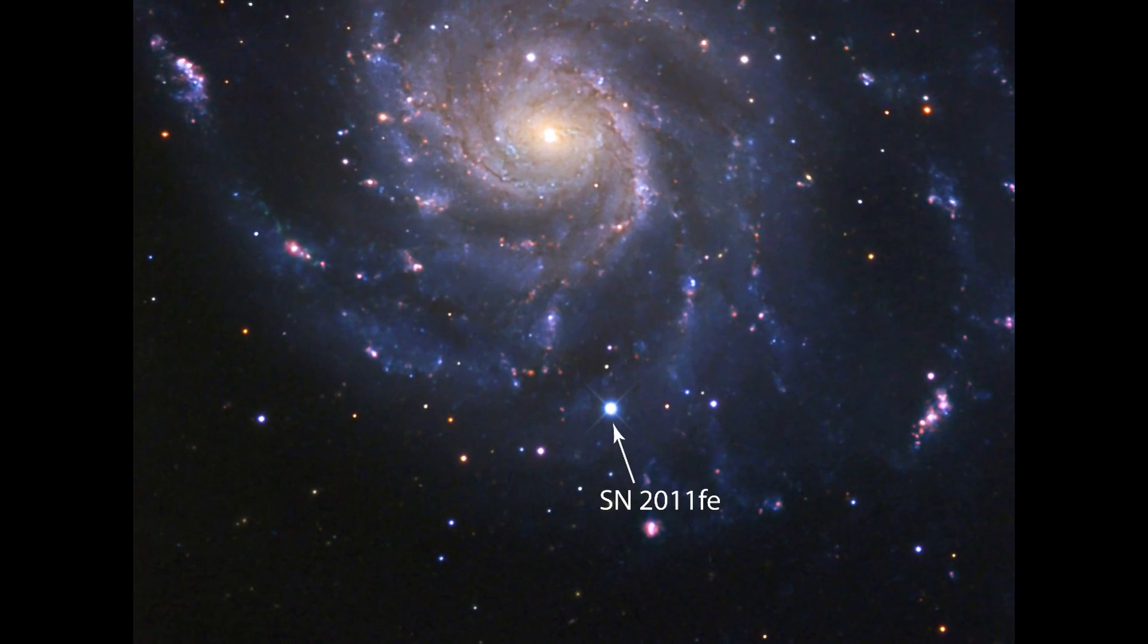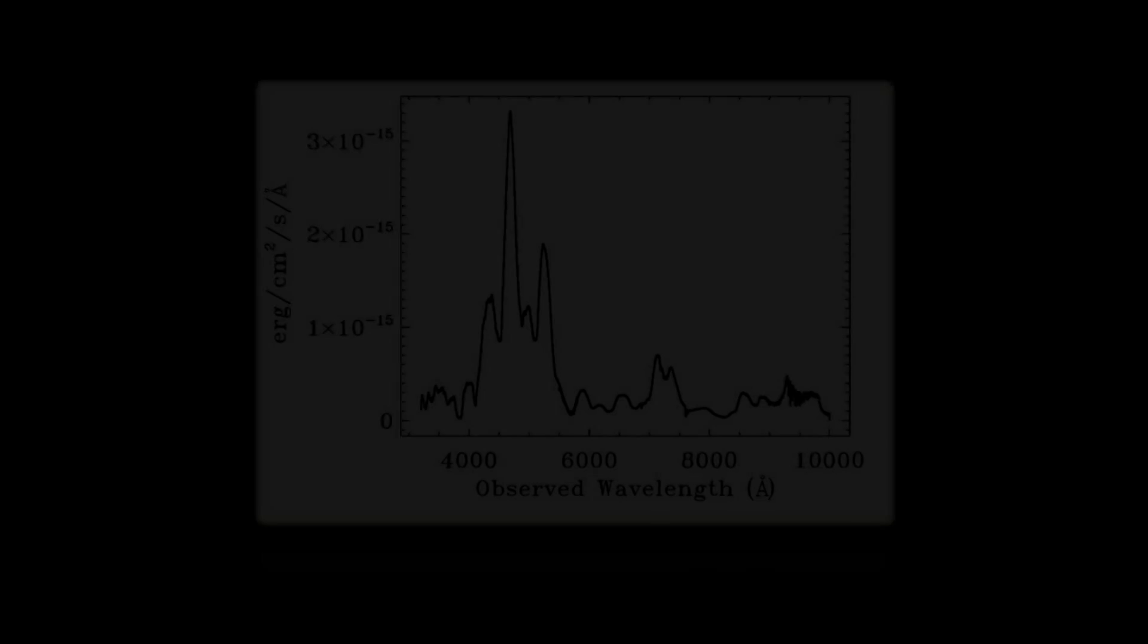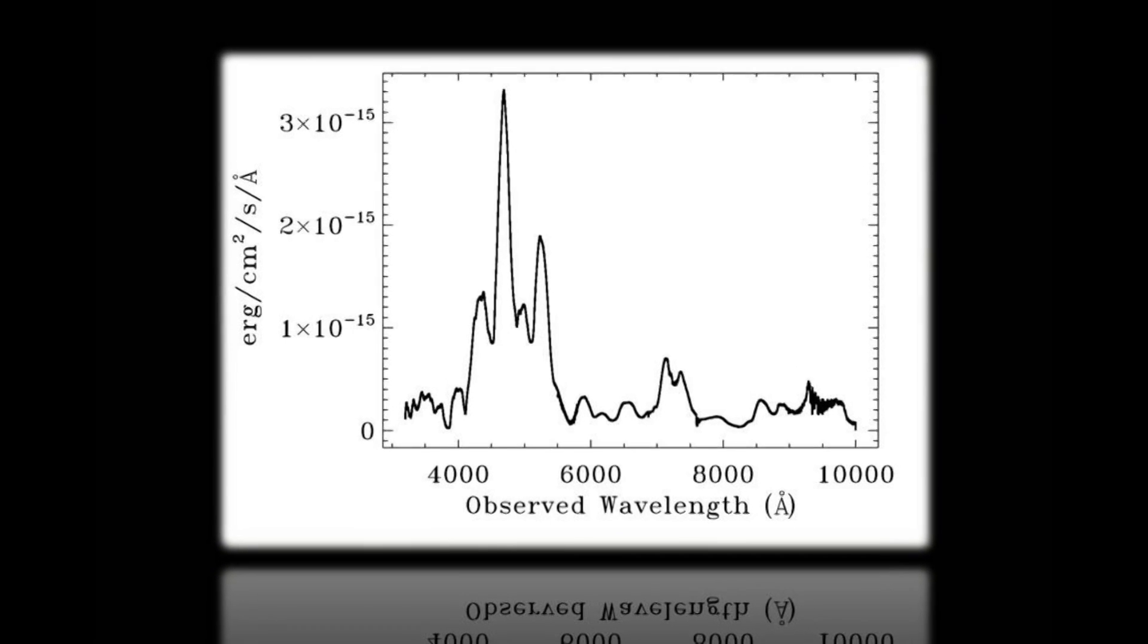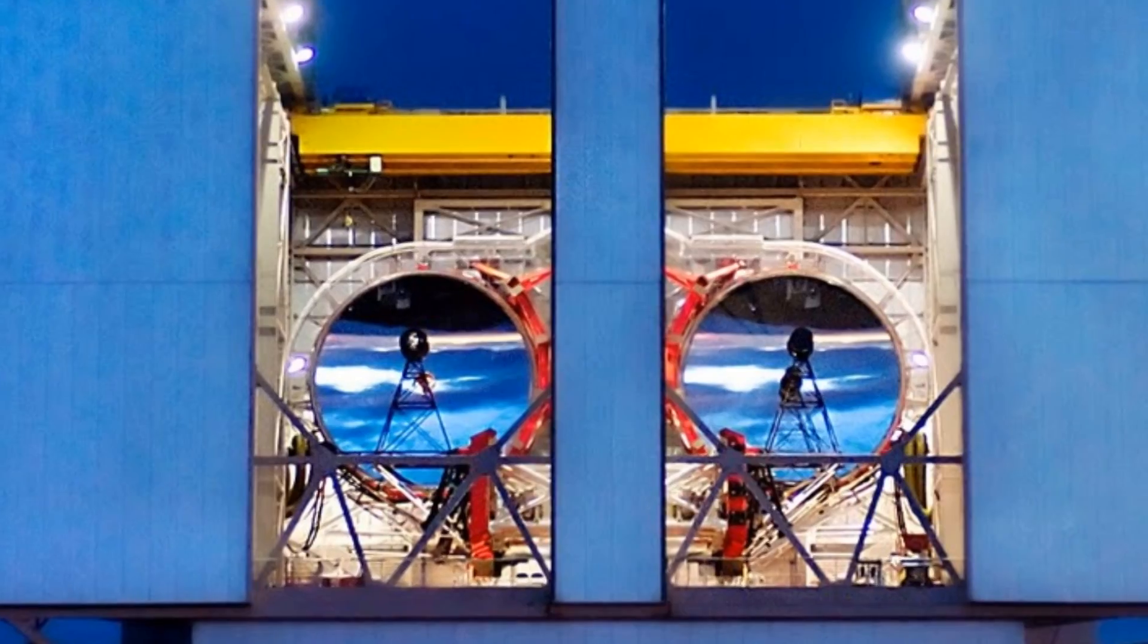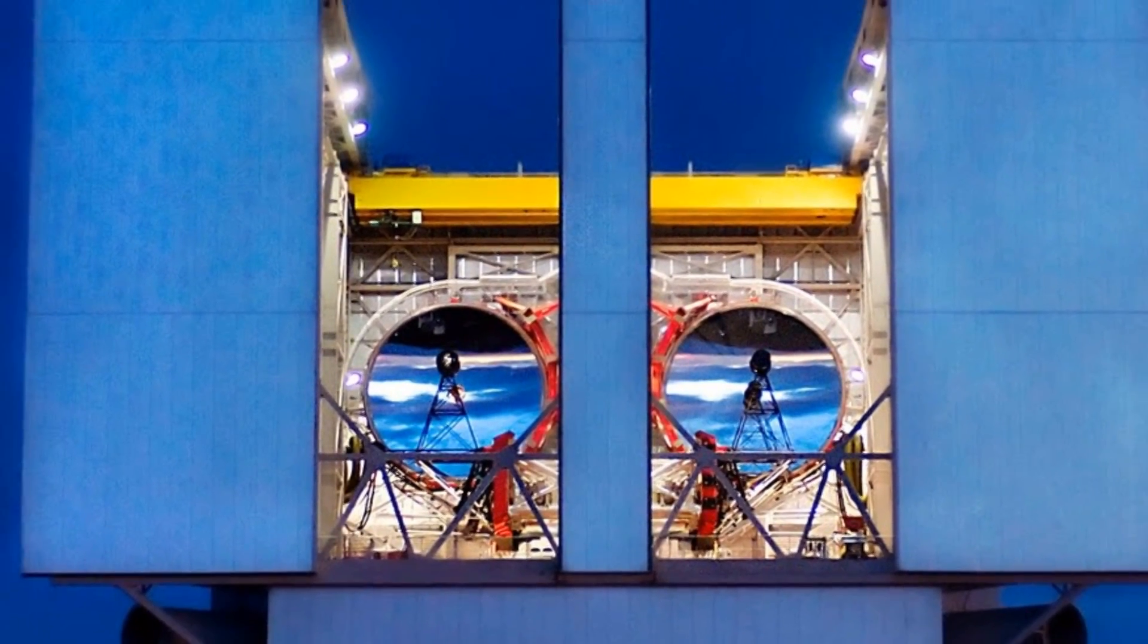In our paper, we present a very high signal-to-noise nebular phase spectrum of 2011 FE, taken 274 days after maximum V-band light. This spectrum was taken with MODS on LBT.